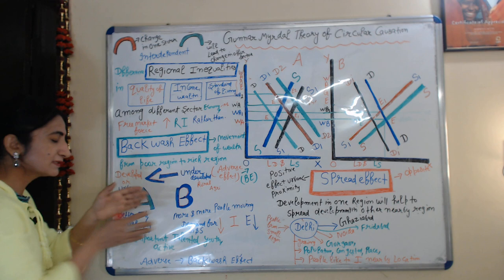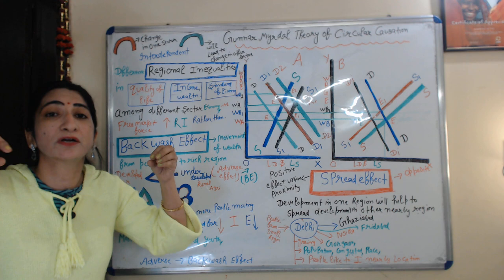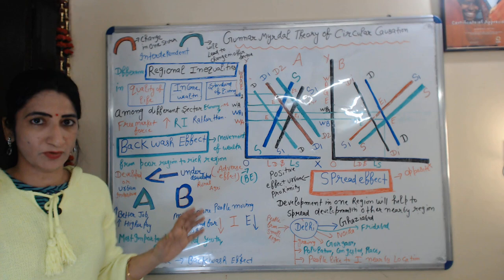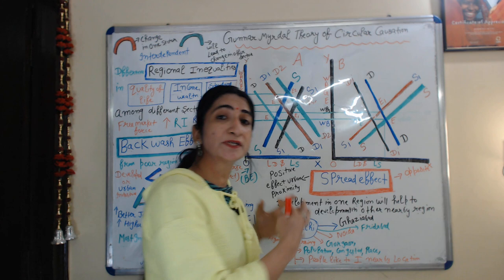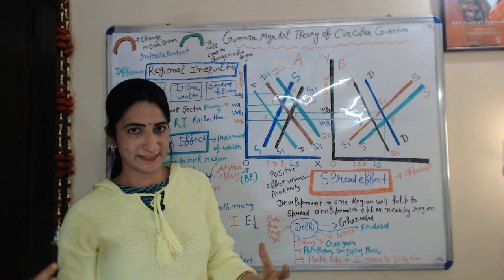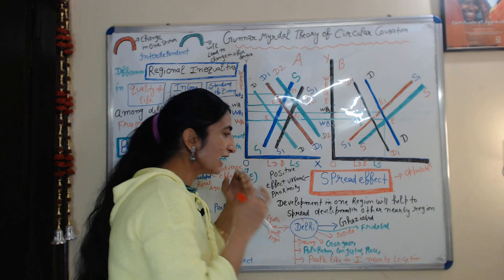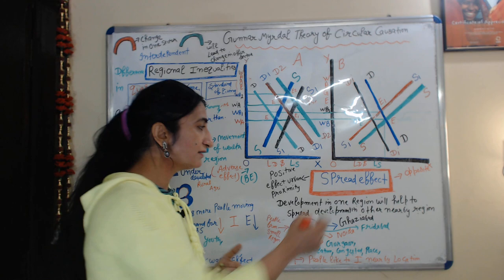The backwash effect means when people from an underdeveloped region start migrating to a developed region, it creates an adverse effect on the growth of the underdeveloped region. On the other hand, spread effect is just the opposite of the backwash effect — it is the positive effect of urban proximity. Spread effect means development in one region helps to spread development to other nearby regions.